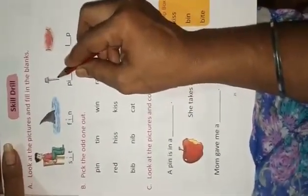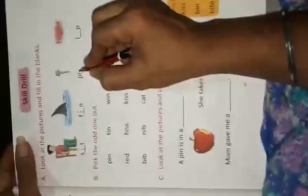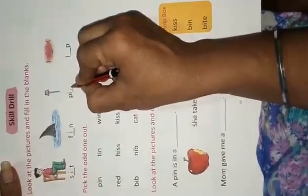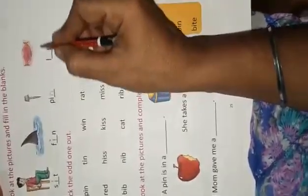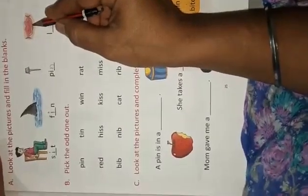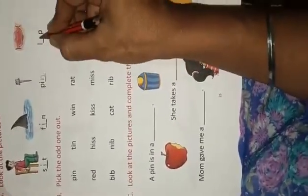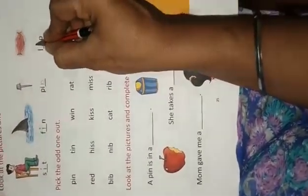What is this? This is a pin. P-I-N, pin. We write here P-I-N. What is this? This is a picture of lip. The spelling of lip is L-I-P, lip.